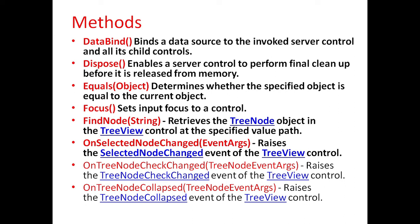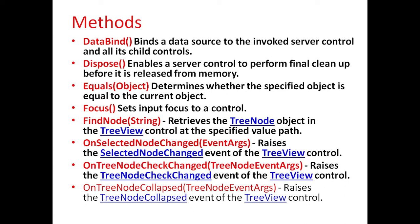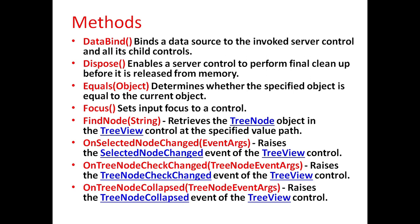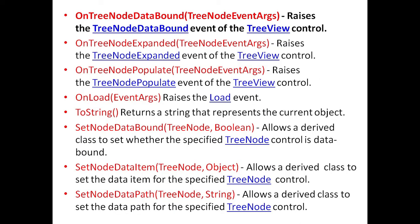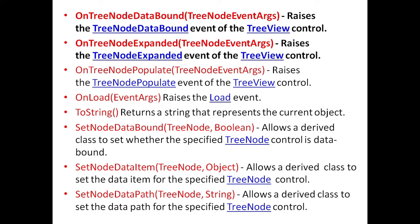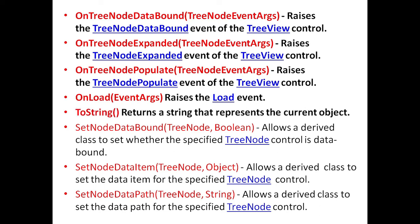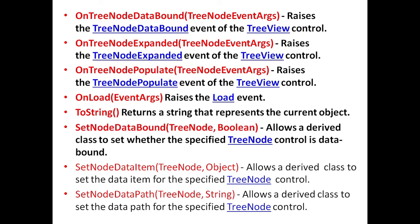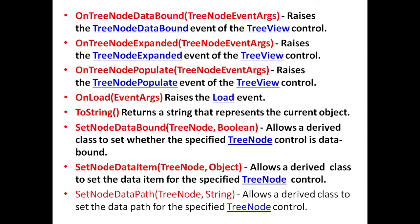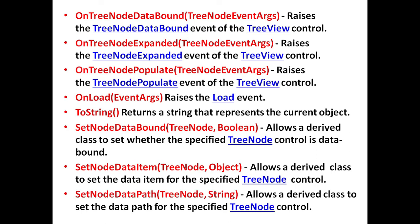OnSelectedNodeChanged method raises the SelectedNodeChanged event of the TreeView control. OnTreeNodeCheckedChanged method raises the TreeNodeCheckedChanged event. OnTreeNodeCollapsed method raises the TreeNodeCollapsed event. OnTreeNodeDataBound method raises the TreeNodeDataBound event. OnTreeNodeExpanded method raises the TreeNodeExpanded event. OnTreeNodePopulate method raises the TreeNodePopulate event. OnLoad method raises the Load event. ToString method returns a string that represents the current object. SetNodeDataBound allows a derived class to set whether the specified tree node is data bound. SetNodeDataItem allows a derived class to set the data item for a specified tree node. SetNodeDataPath allows a derived class to set the data path for a specified tree node control.